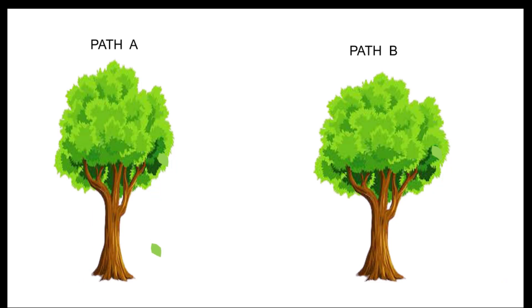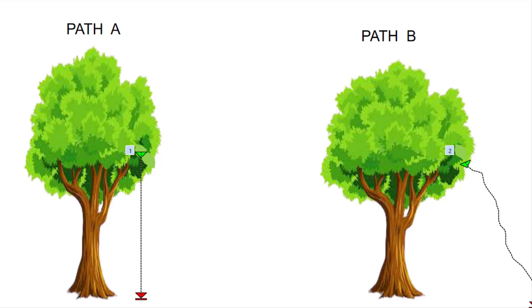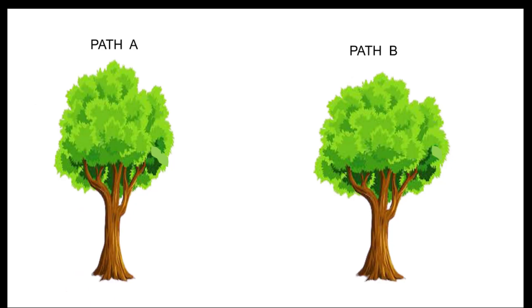Path A is the shortest distance to reach the ground. But if you look at path B, the leaf travels according to the wind, makes a curved path, and then reaches the ground.